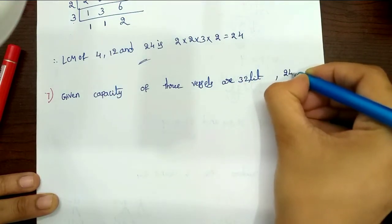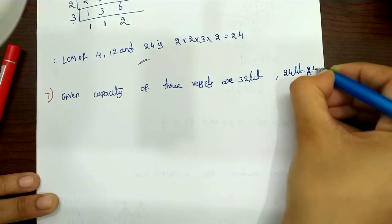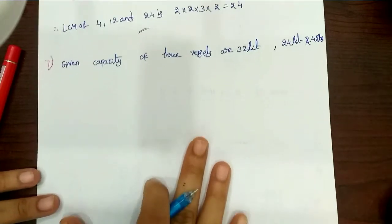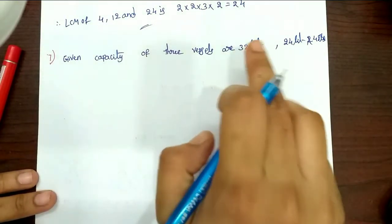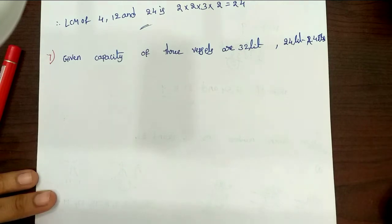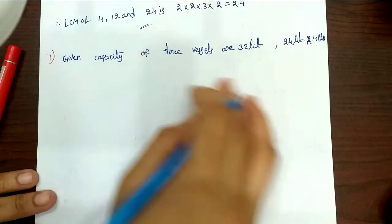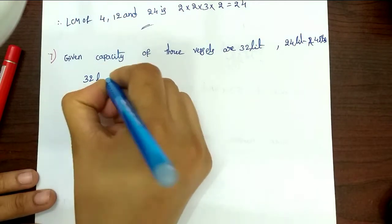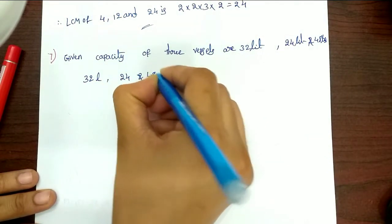HCF of 24 liters and 48 liters. Now we are using the largest vessel. First of all, we are using these 3 vessels. Let us use 4 liters — we have 32 liters, 24 liters, 48 liters.